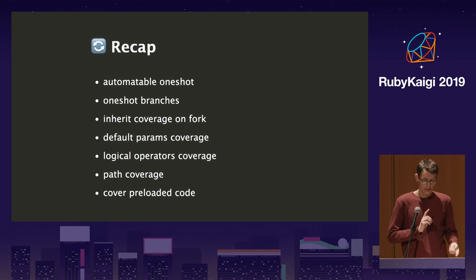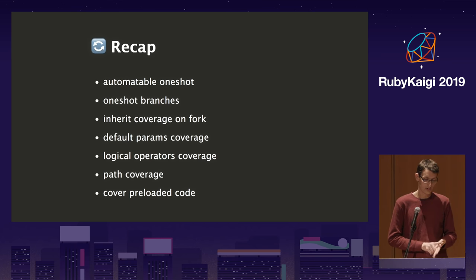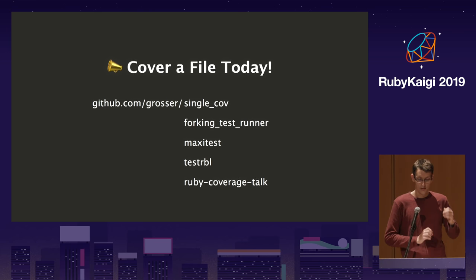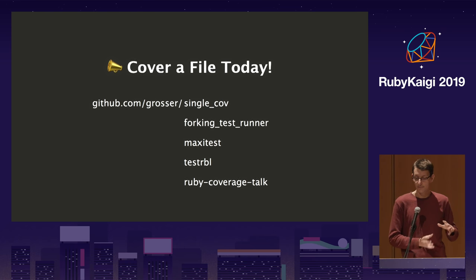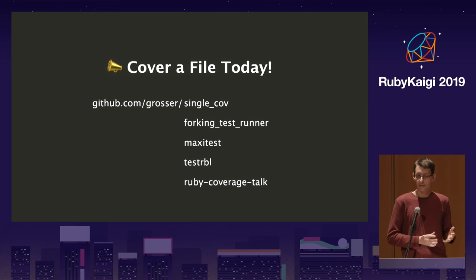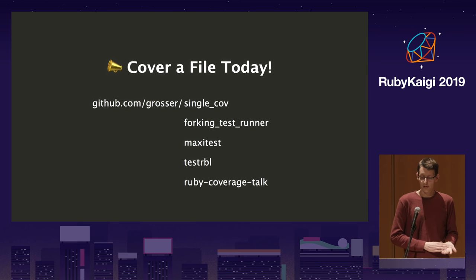Recap wish list: automatable one-shot, one-shot branches, inherited coverage across forks, default parameter coverage, logical/Boolean operator coverage, path coverage, and coverage for preloaded modules. My call to action for you is: cover a file today. Try it out on your toy project, your most critical session controller, or user backend. See if you actually have the kind of coverage you think you have, and if your tests are actually doing all the things you think they are.